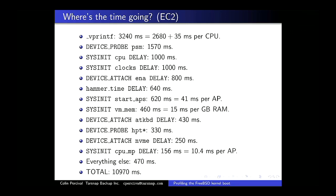Running this on several EC2 instances, some times stay constant and some depend on instance size. For vprintf, each additional CPU adds another 35 milliseconds. Start APs was 41 milliseconds per AP (auxiliary processor — any CPU other than CPU zero). VM initialization was about 15 milliseconds per gigabyte of RAM. CPU MP is 10.4 milliseconds per auxiliary processor. The other things stay pretty much constant.